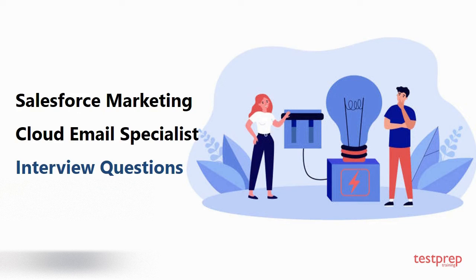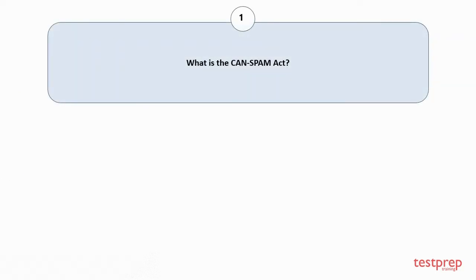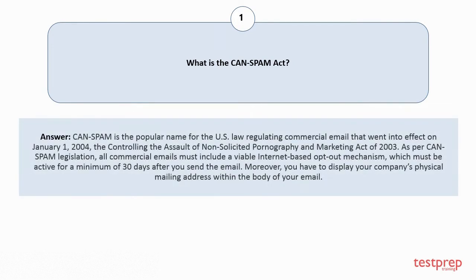Question number one: What is the CAN-SPAM Act? CAN-SPAM is the popular name for the U.S. law regulating commercial email that went into effect on January 1st, 2004 — the Controlling the Assault of Non-Solicited Pornography and Marketing Act of 2003. As per CAN-SPAM legislation, all commercial emails must include a viable internet-based opt-out mechanism which must be active for a minimum of 30 days after you send the email.